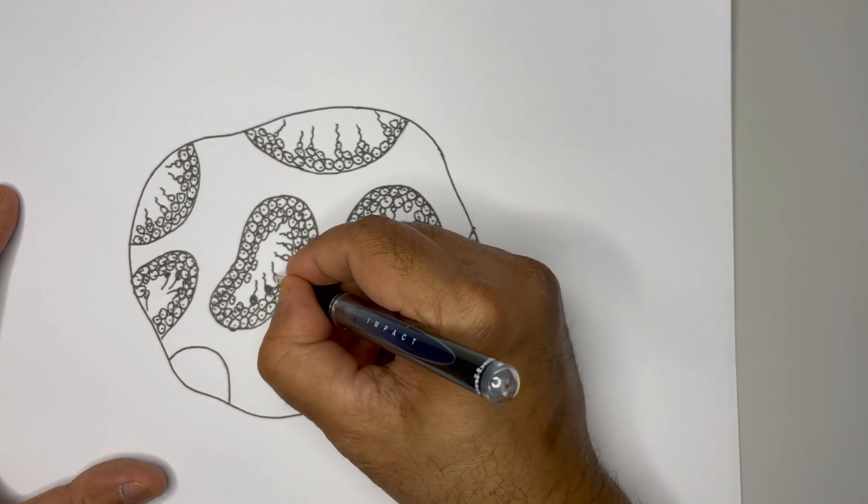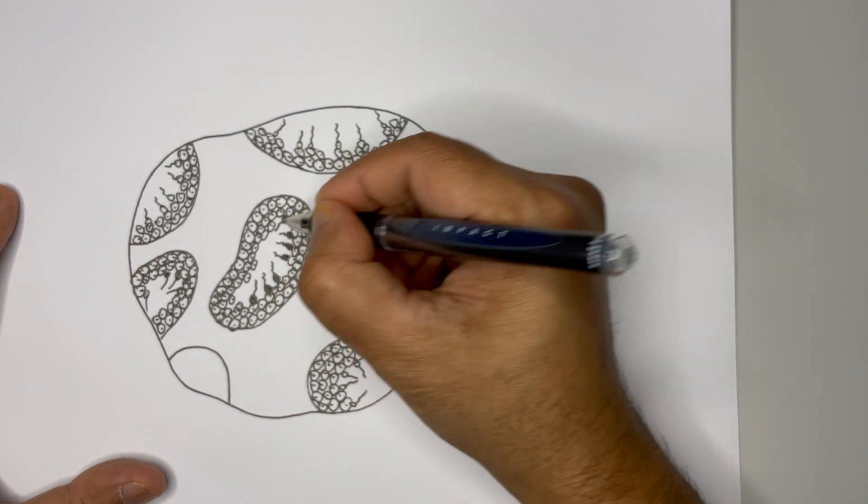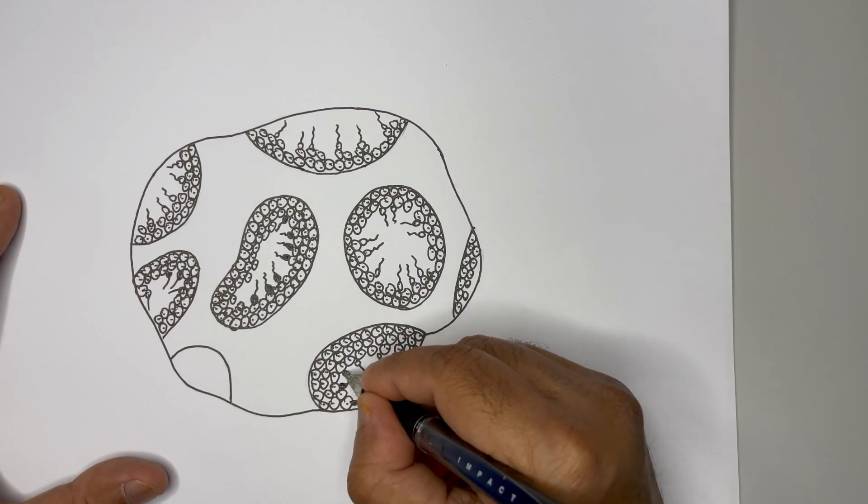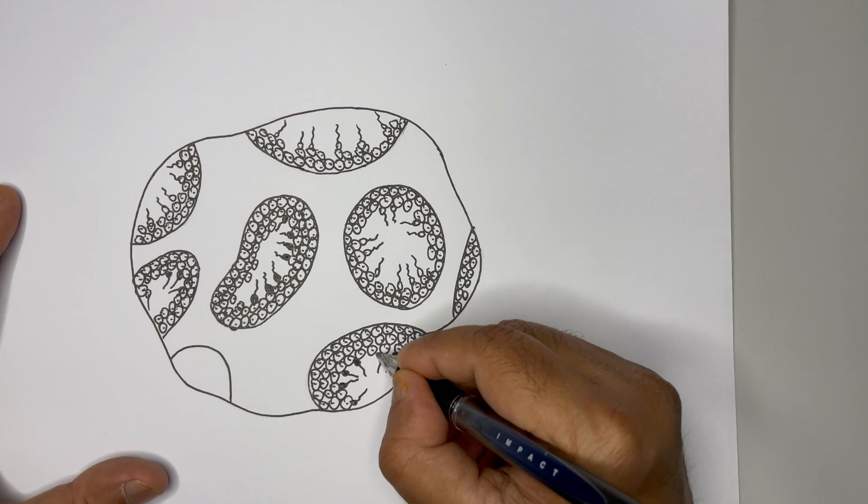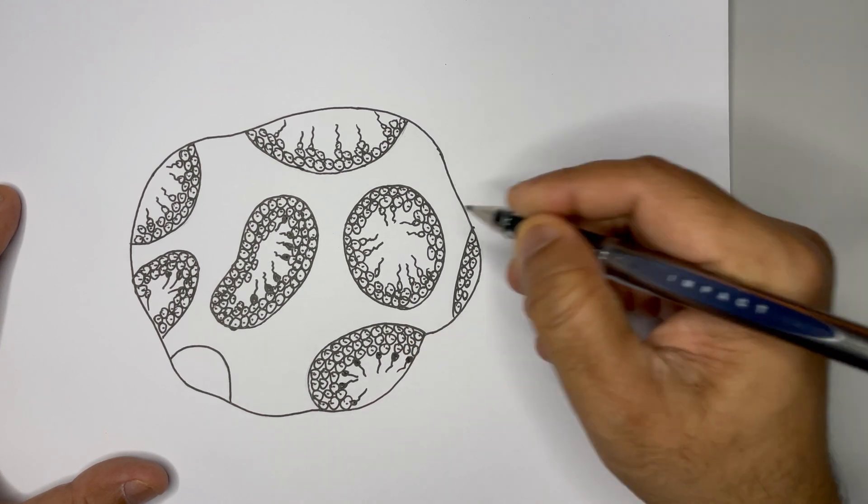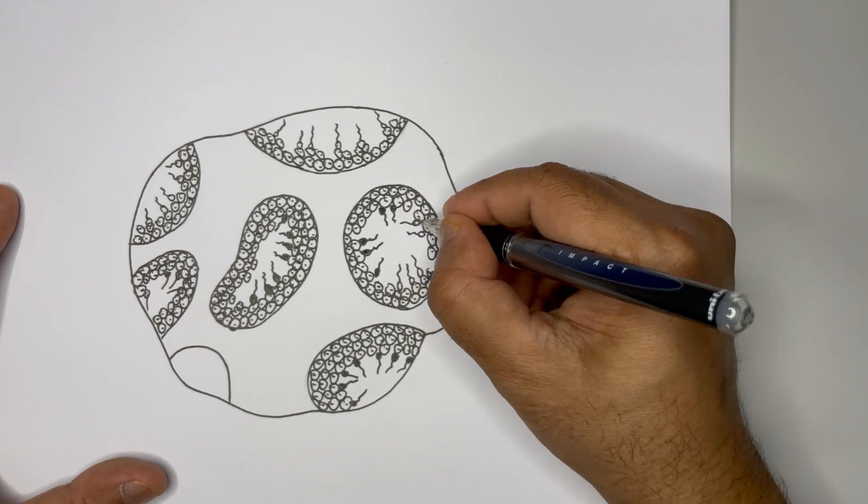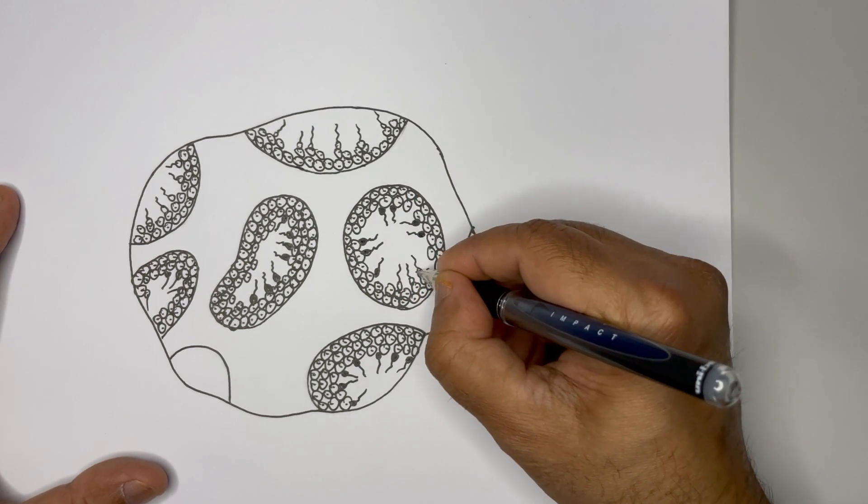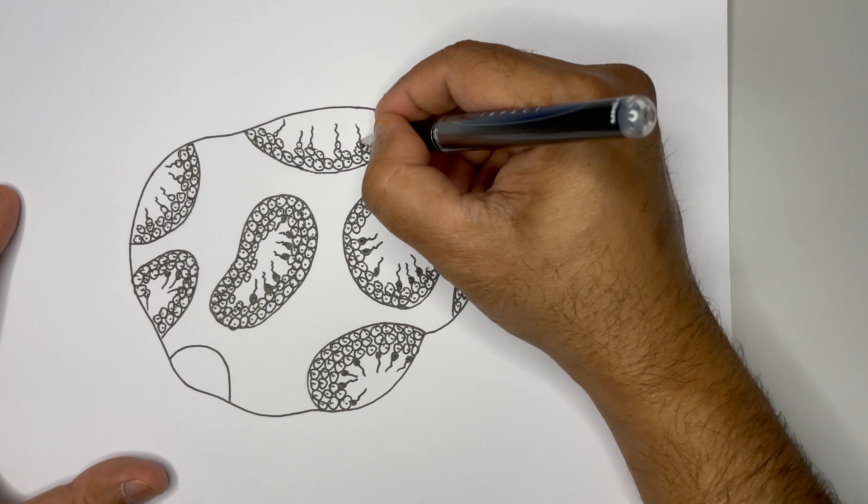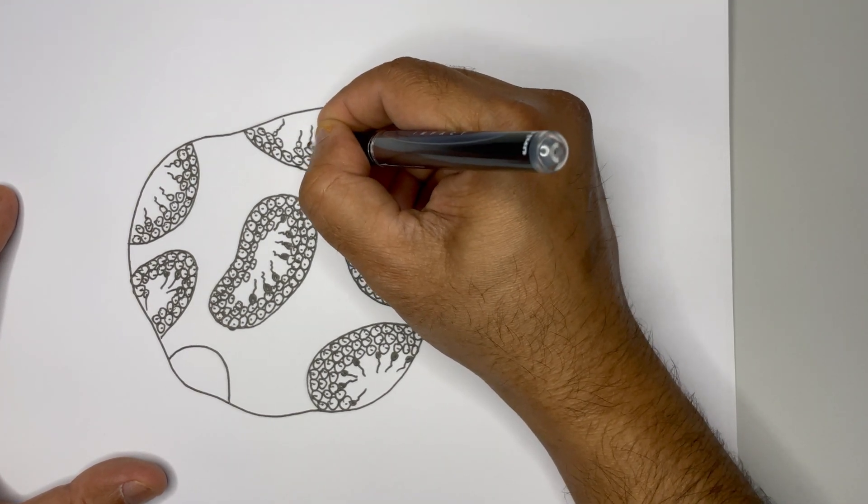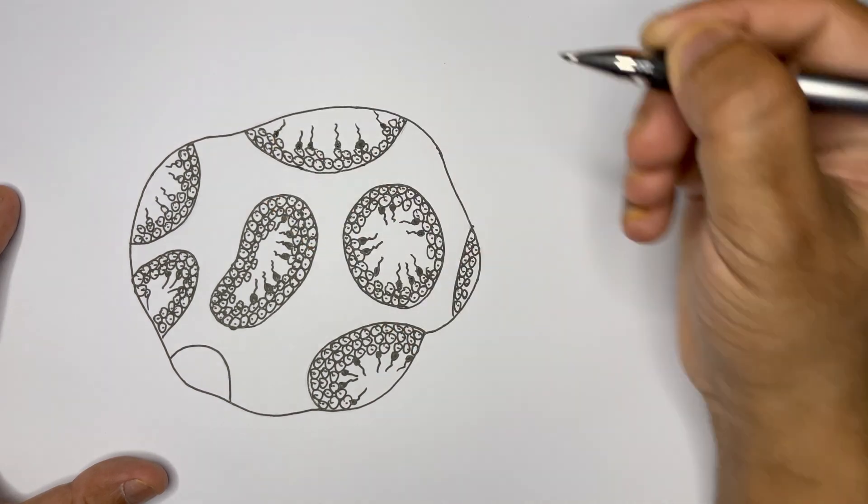So guys, just to make the sperm stand different, you notice I'm just putting the black color on the head of the sperm, so on a single notice itself a person can identify the sperm separately from the other cells. Hope you understood why am I giving the black color for the sperm head.